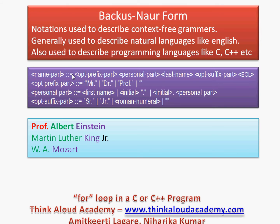For example, if I have to write the name of a person in a generic syntax, how do I do that? Names could be Professor Albert Einstein, Martin Luther King Jr., or W.A. Mozart — three different ways of writing a person's name. In Backus-Naur form, a name has an optional prefix part, a personal part, a last name part, and an optional suffix part. The optional prefix could be Mr., Doctor, Professor, or nothing. The personal part could be a first name, or an initial with a dot repeating. The optional suffix could be senior, junior, a Roman numeral, or nothing.